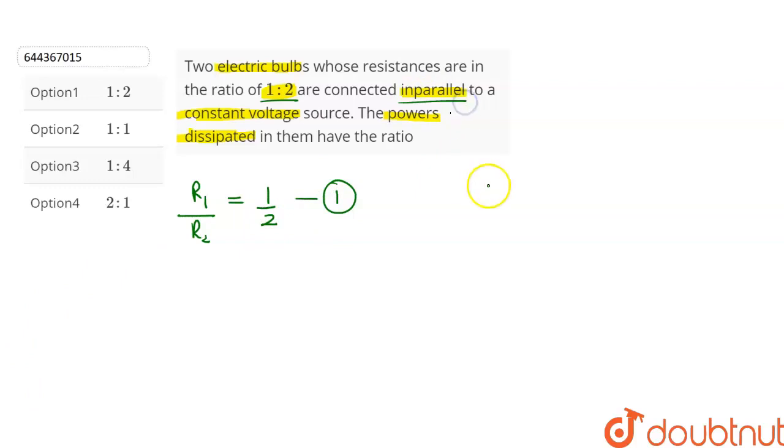As they are connected in parallel, the voltage across both of them will be the same, and power is given by P equals V squared upon R.